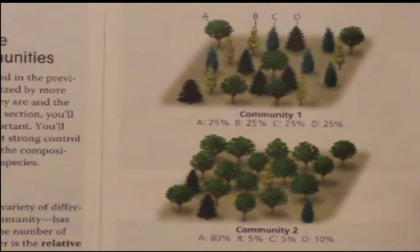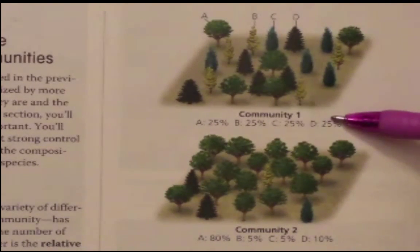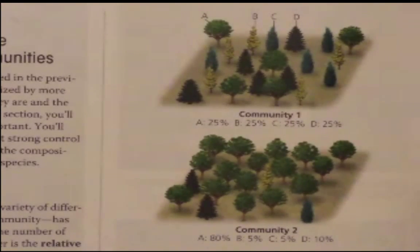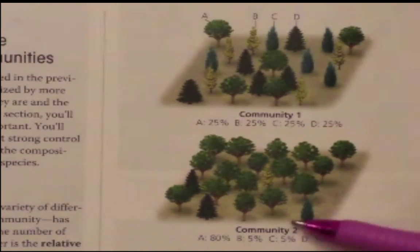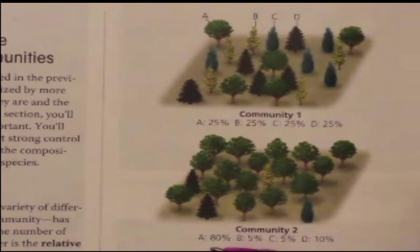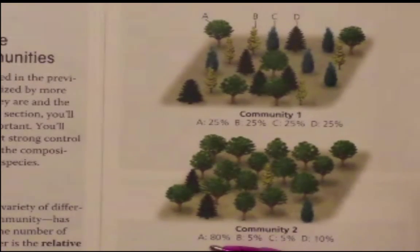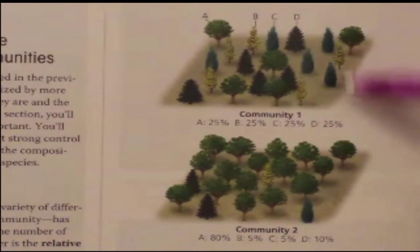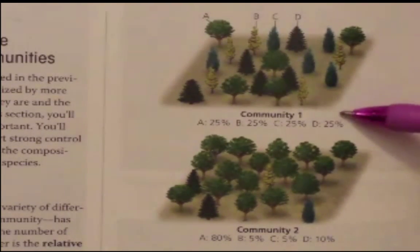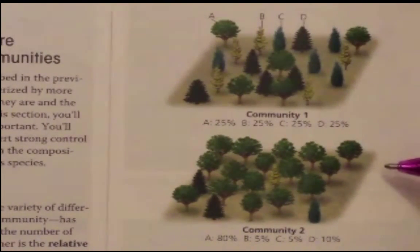Now let's look at relative abundance. In community 1, each of the four species A through D are equally represented. In community 2, we see all four species — which contributes to species richness — but species A is much more predominant; eighty percent of the trees are of species A.